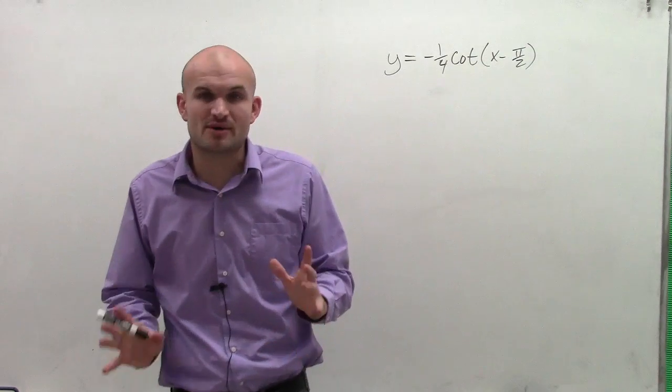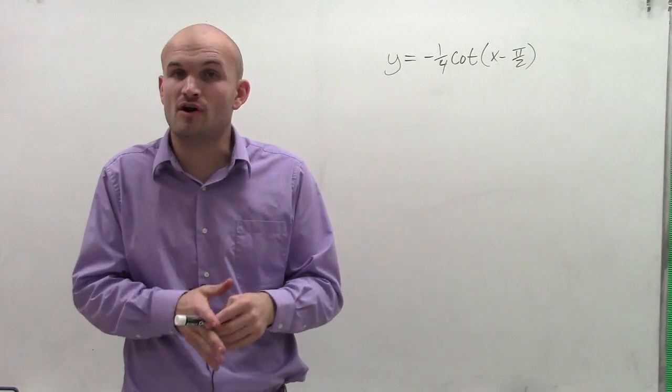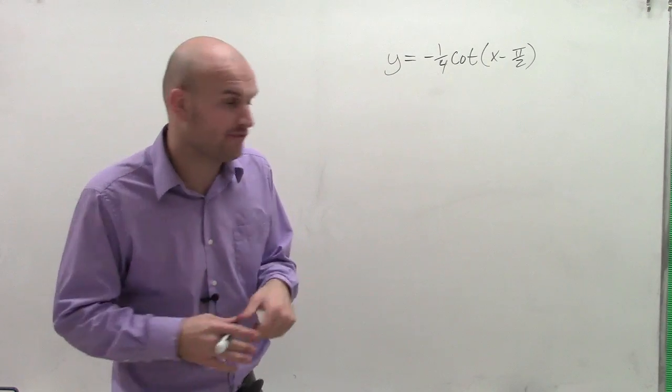And then we have x minus pi halves. Since we have a transformation inside of our function, that's going to shift our graph left or right, which we call a phase shift.